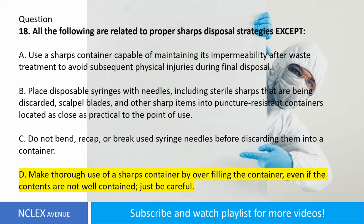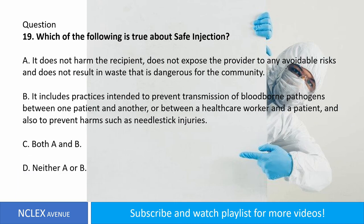Question number nineteen. Which of the following is true about safe injection? A. It does not harm the recipient, does not expose the provider to any avoidable risks, and does not result in waste that is dangerous for the community. B. It includes practices intended to prevent transmission of blood-borne pathogens between one patient and another, or between a healthcare worker and a patient, and also to prevent harms such as needlestick injuries. C. Both A and B. D. Neither A nor B. Answer: letter C. Both A and B.